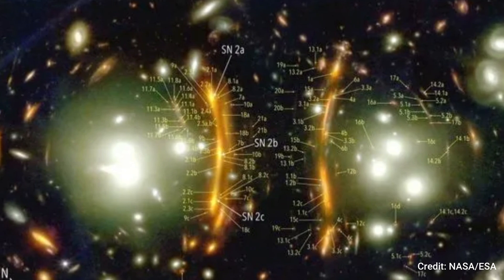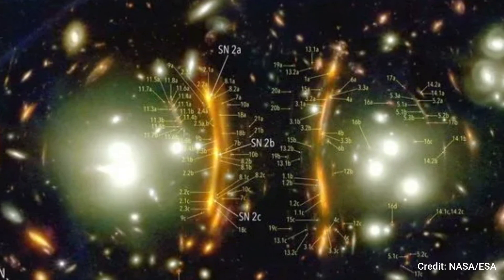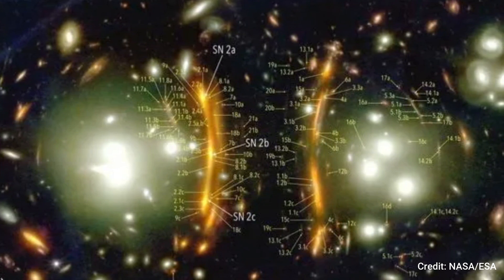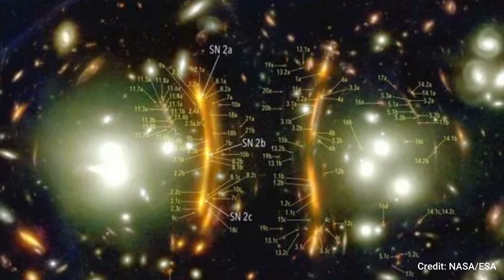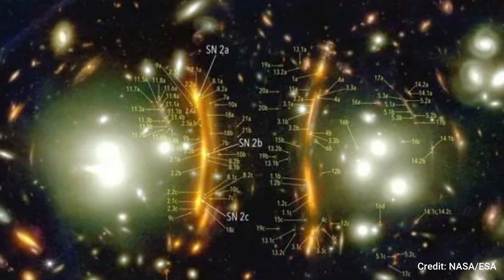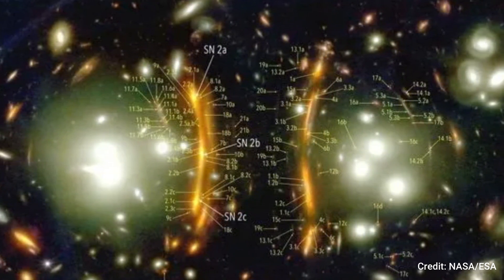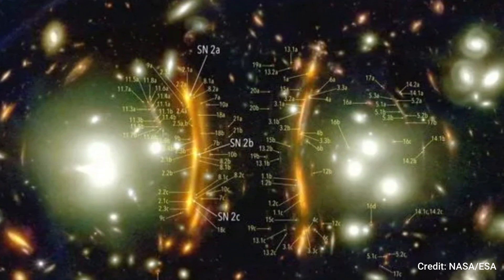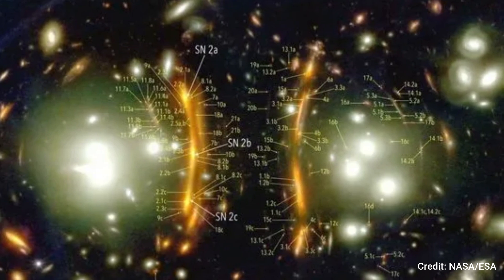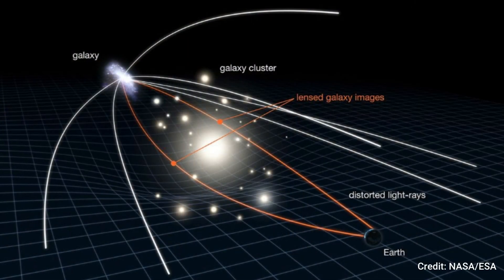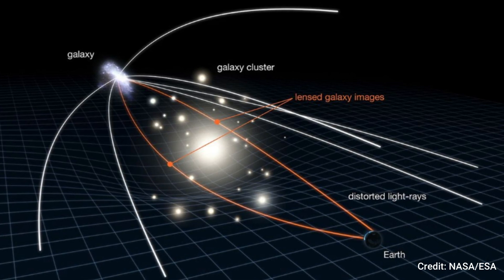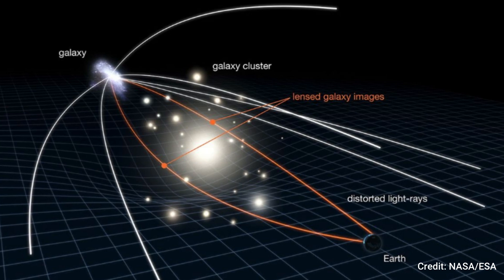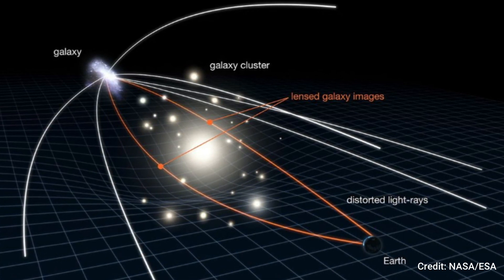Initially spotted amidst the photographs captured by NASA's James Webb Space Telescope in March, this cataclysmic event manifests as an orange-hued arc of light encircled by three luminous points adjacent to the galaxy cluster PLCKG-165.7 plus 67.0, situated approximately 4.5 billion light-years distant from Earth. The luminous arc owes its existence to gravitational lensing, a consequence of light from a distant entity, like a supernova, traversing through the space-time warped by the gravitational influence of a massive intervening object.